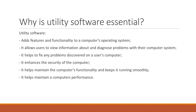So why is utility software essential to the operating system and to the computer as a whole? It is essential because it adds features and functionality to the computer's operating system. It allows users to view information about and diagnose problems with their computer system. It helps to fix any problems discovered, enhances security, helps maintain functionality, and helps maintain a computer's performance.